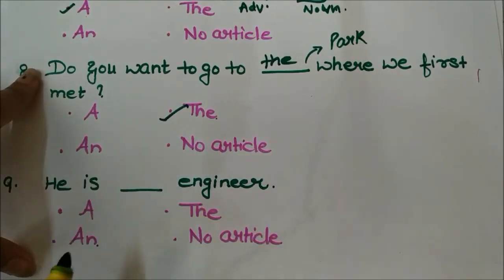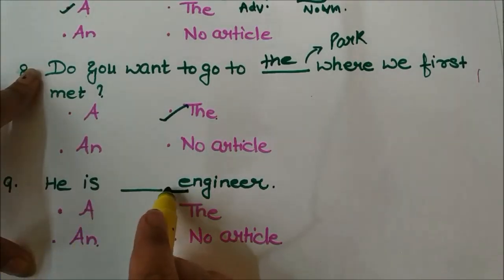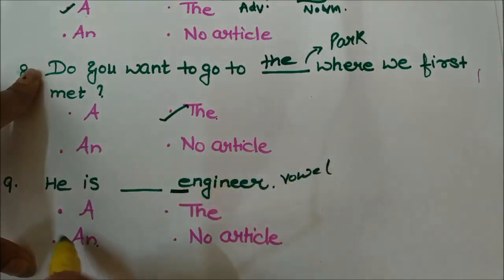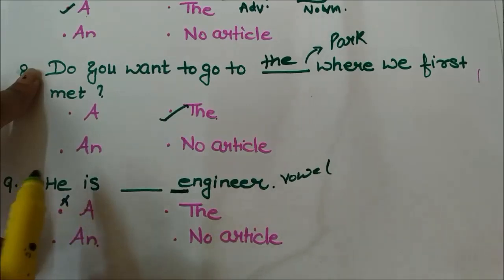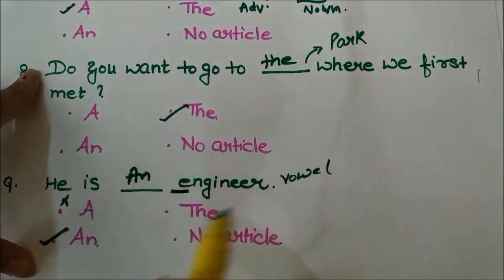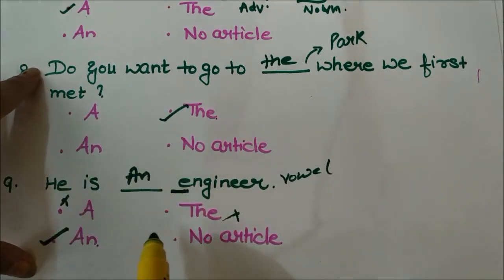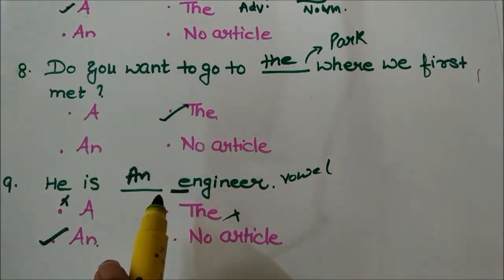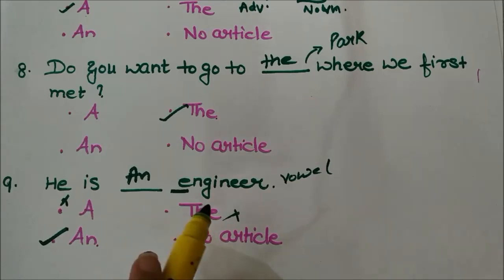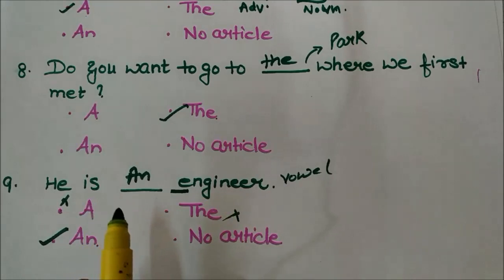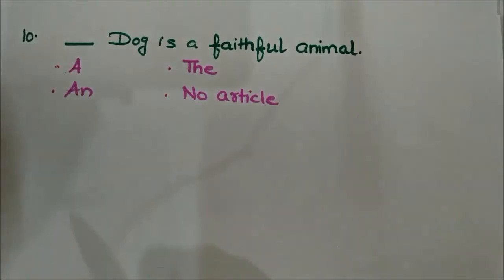Next question: 'He is ___ engineer.' The word 'engineer' starts with the vowel sound 'e', so we use 'an'. Why not 'the'? Because there are many engineers and no specific branch or specification is mentioned in the sentence. So the answer is 'an': 'He is an engineer.'